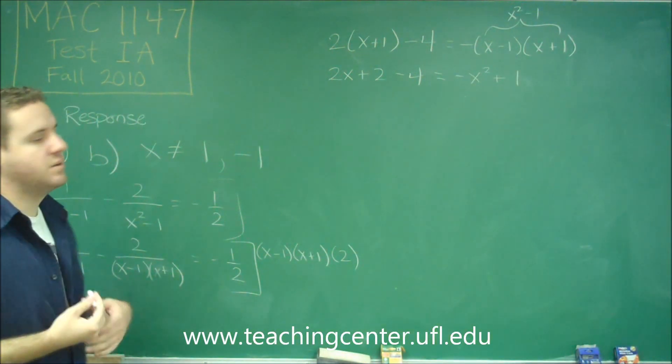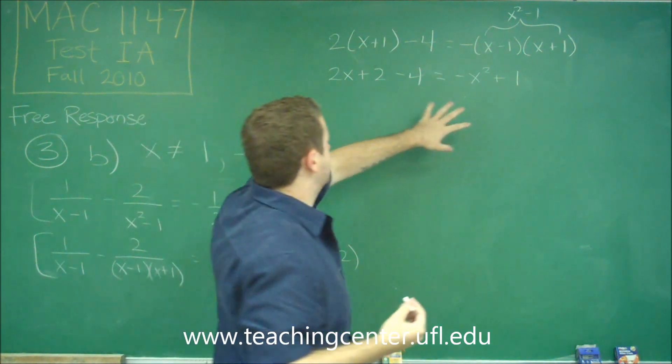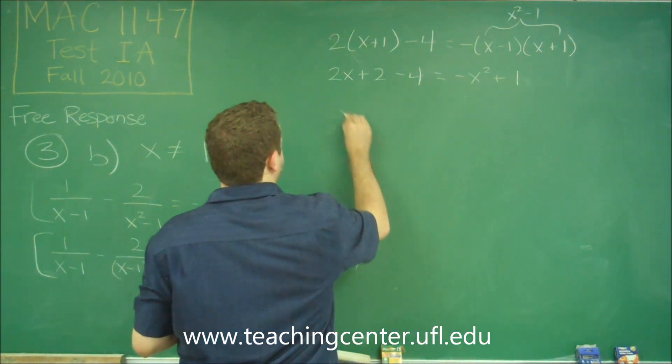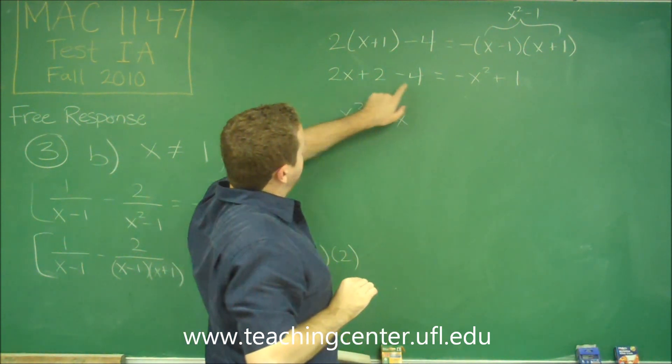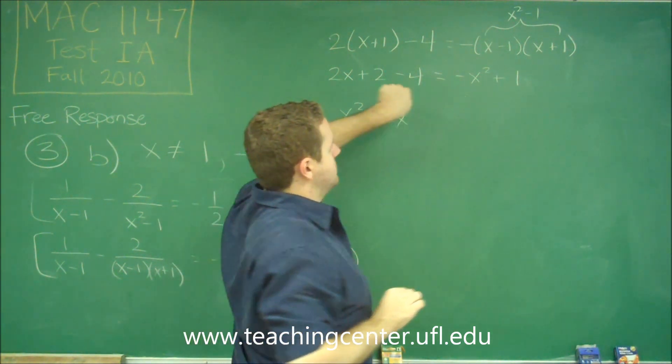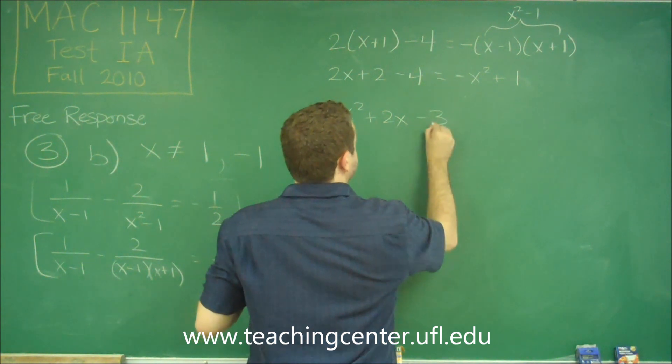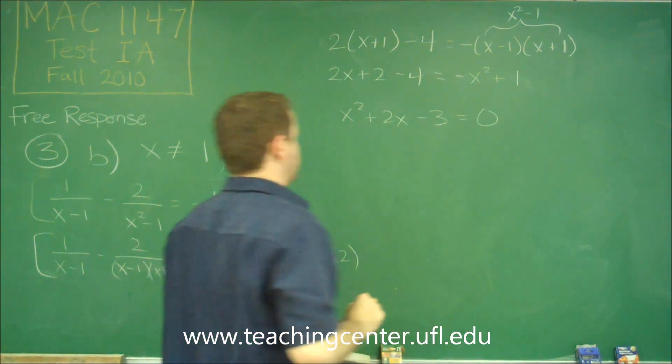So now we just need to reorganize into a quadratic. Let's move everything to the left side here. So we'll have x squared. We only have one x term plus 2x. 2 minus 4 would be negative 2, and then we subtract another 1 over, so we get minus 3 equals 0.